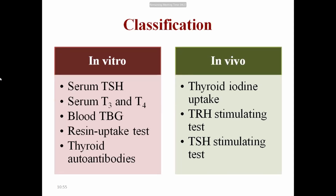The blood TBG test and resin uptake test are nowadays out of date and have historical importance only. In vivo tests include thyroid iodine uptake, TRH stimulation test, and TSH stimulation test. The TRH and TSH stimulation tests are generally done to locate the site of pathological lesion and to distinguish secondary hyper- or hypothyroidism.